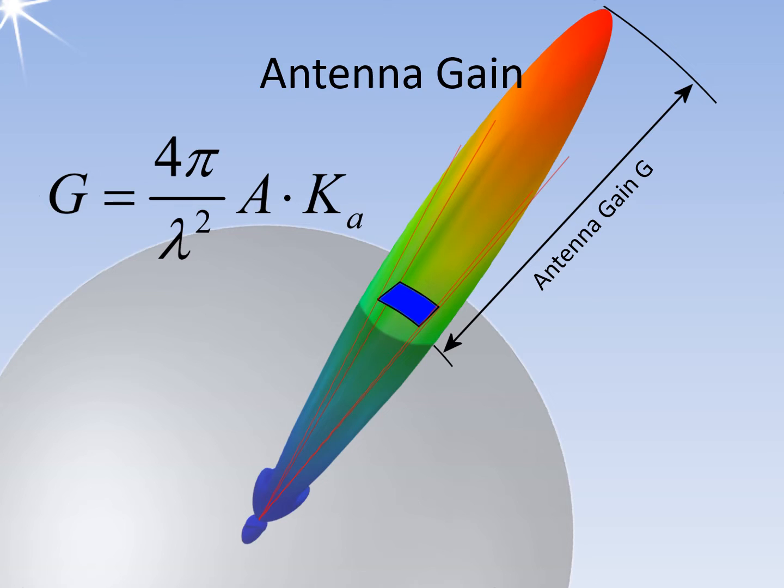The power of the transmitter is now distributed over far fewer of these small lambda surfaces than with an isotropic radiator. The antenna gain depends on the ratio of its geometric area to the small lambda square area. The antenna gain is therefore dependent on the wavelength. It can deviate noticeably from the nominal value for broadband radar transmitters.